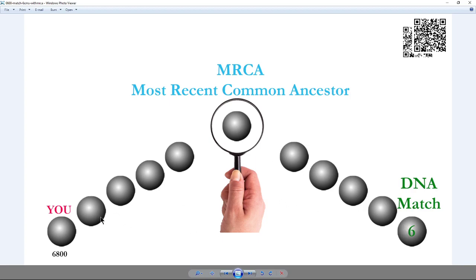MRCA stands for Most Recent Common Ancestor — note it's singular, not plural. That's because a lot of times the couple is married, and that throws off the numbers a little. There is 'Most Recent Common Ancestors' if both are the same, which will be discussed later. We're looking for that intersection. If they're married it could be either the male or female, but we're looking for where the trees intersect. From the 6 cM level, you count up: 3400, 1700, 850, 425, 212, 112, 56, 23, 12, 6 — going up 5 steps on each side.